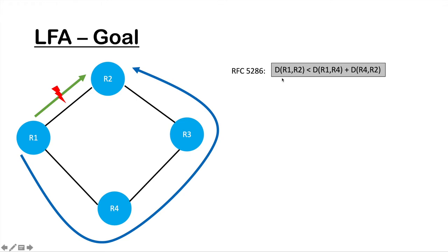One inequality says that the distance between R1 and R2 should be less than the distance from R1 to R4 plus the distance from R4 to R2. Basically, this inequality ensures that the backup path does not go through R2 — as long as we can ensure that, it is not a looping path. There are also inequalities for broadcast networks, for node protection scenarios, and for downstream paths — so there are four or five inequalities defined for any repair path to qualify as a loop-free alternate.